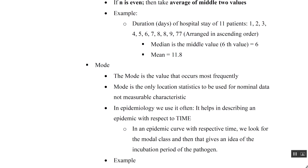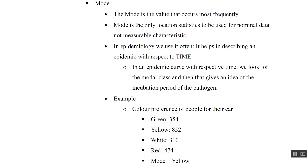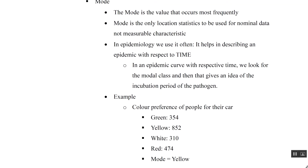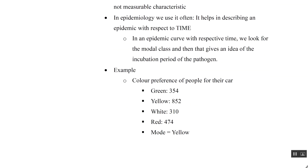Mode is the value that is repeated most frequently. It is usually used for nominal data but can be used for quantitative data as well. For example, for color preference — green, yellow, white, red — if yellow is preferred most, then the mode is yellow.